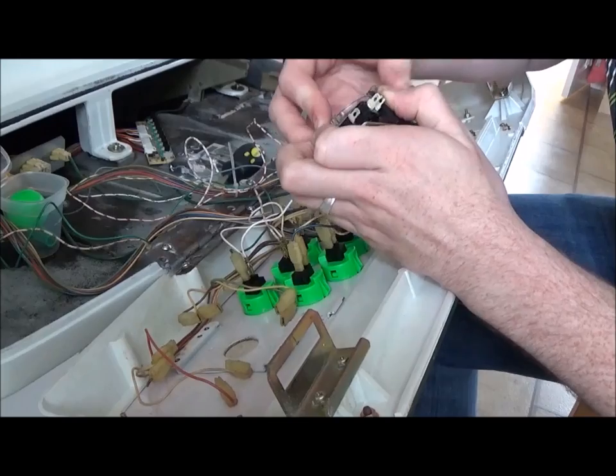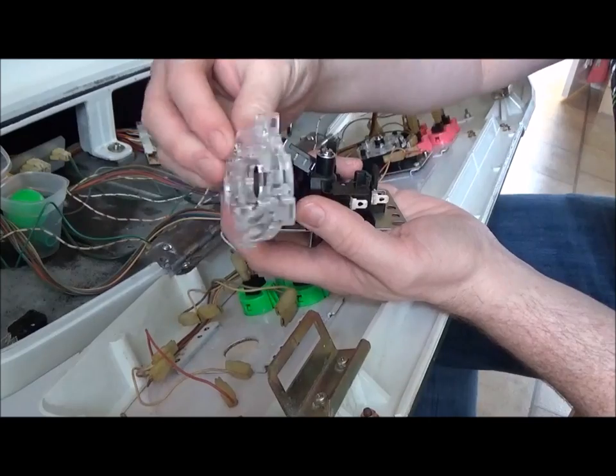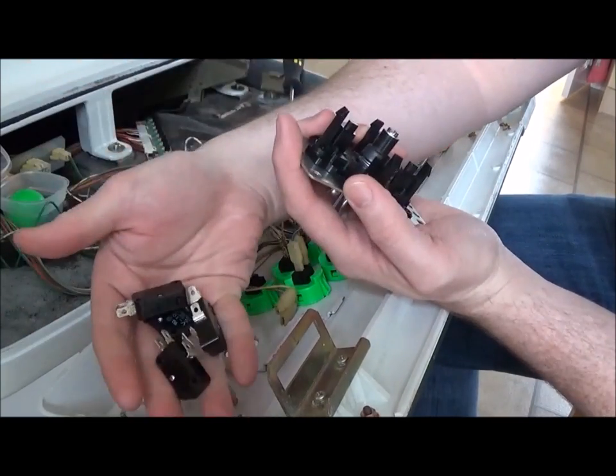There's the JLF itself. Now the restrictor gate will come off with a little bit of playing around. There you go, I've got it off. Make sure it doesn't fall in the back of the cabinet.